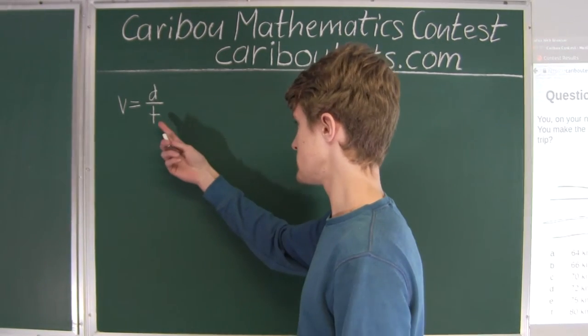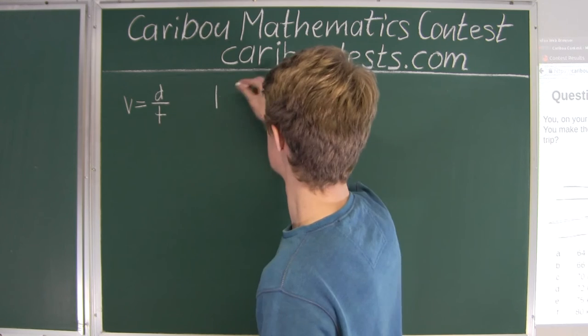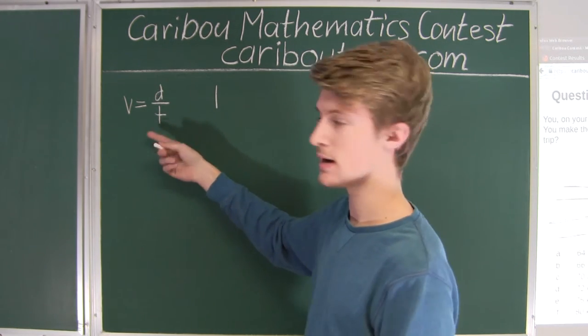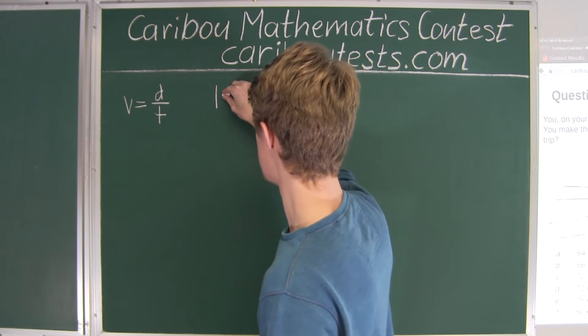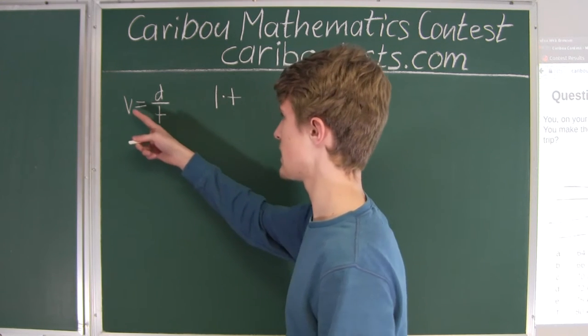So now we just want T on its own. First we would have to multiply both sides by T to get rid of this denominator. Then we would have TV is equal to D.